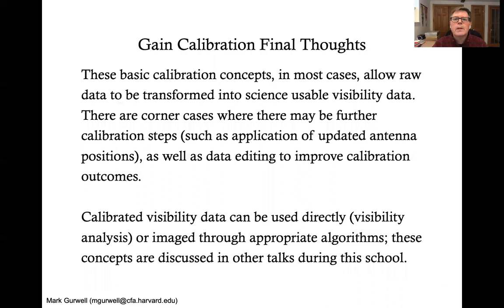So I will continue on this vein in calibration two, but I wanted to give a few final thoughts here as we're ending this first talk. These basic calibration concepts in most cases will allow the raw data to be transformed into science usable visibility data. But there are cases where you will need further calibration. If you want to update the position of antennas, you probably would want to go through data editing to improve your calibration outcomes. When you're done and completed with your gain calibration, you will be able to use that data directly. You can do things called visibility analysis, which just looks at this visibility data versus what you might expect for a source. And you're able to derive very precise science information from the data. You can also take this visibility data and make images through the appropriate algorithms. And these, of course, will be talked about in other talks at the school.